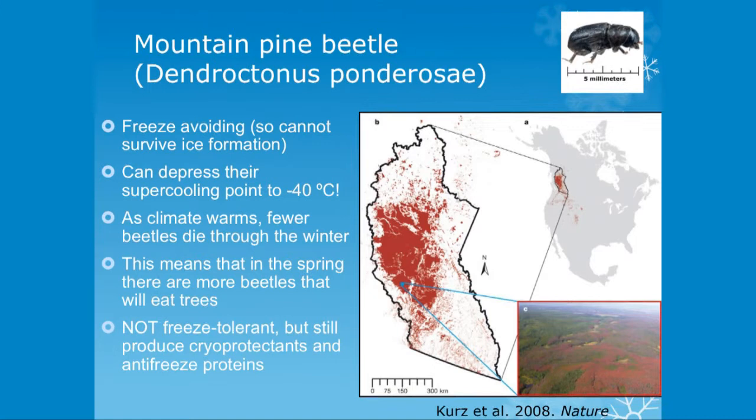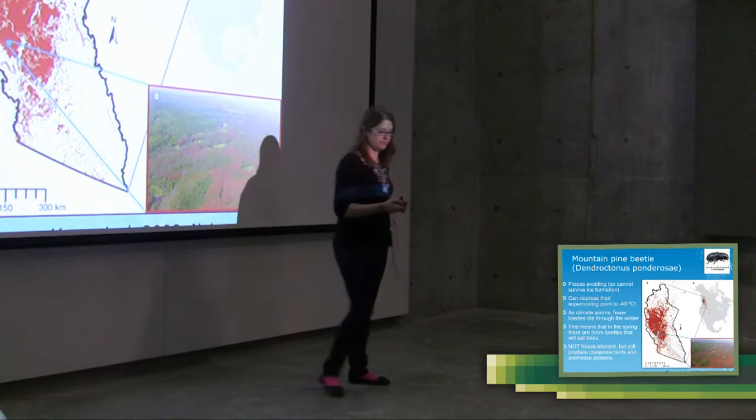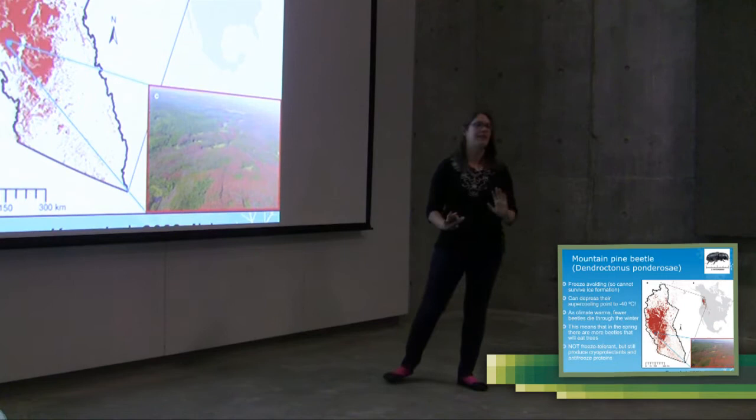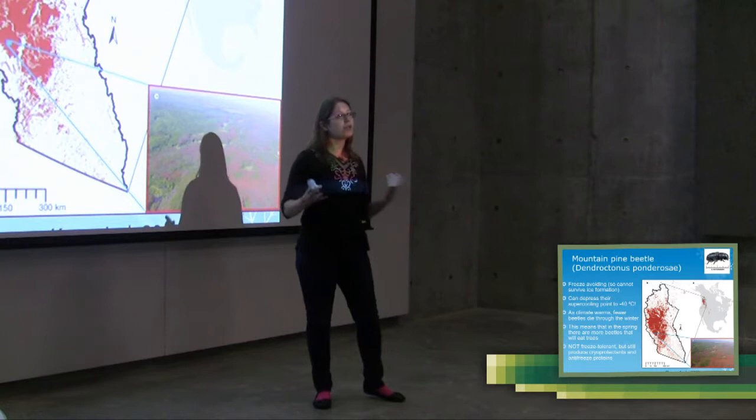So it's a freeze-avoiding species. That means it can't actually survive ice formation. But what it can do is avoid freezing all the way down to minus 40 degrees Celsius. So even though the temperatures are well below what we think of as the freezing point of water, they remain unfrozen.